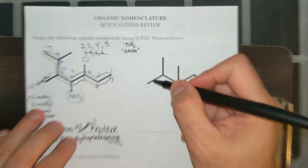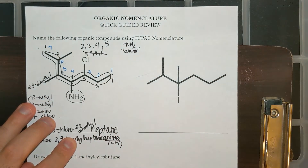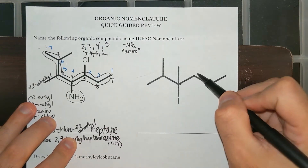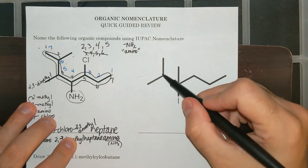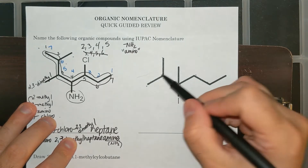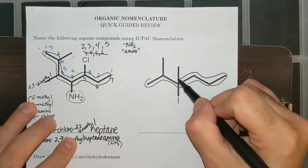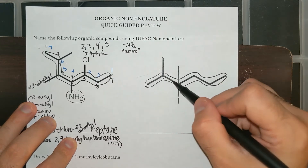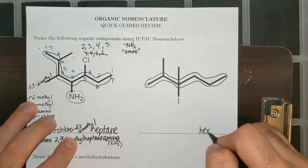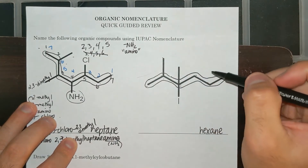Now let's do the next one. I have to find the parent chain, which is the longest chain. Counting the possible chains: six is definitely my longest chain here. Six carbons, all single bonds — this is going to be hexane. And it looks like I have three substituents.